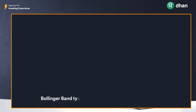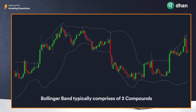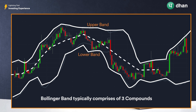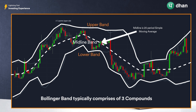A Bollinger Band typically comprises three components: the upper band, the lower band, and the midline. The midline is a 20-period simple moving average, and the upper and lower bands are two sigma points from the price — two sigma on the upper side and two sigma on the lower side. Since our charting platforms already compute these values for us, we need not get into the details of how they are calculated.